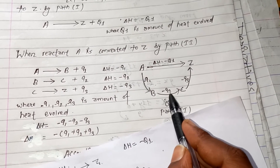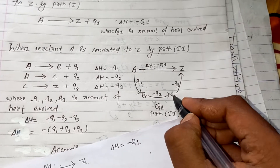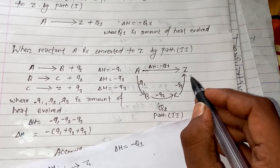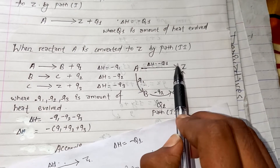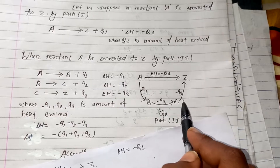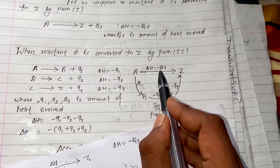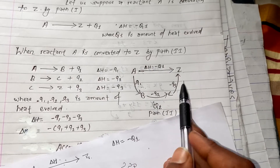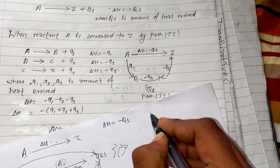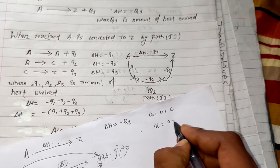In path 2: A to B evolves heat Q1; B to C evolves heat Q2; C to Z evolves heat Q3. The total heat for the endothermic or exothermic process is the sum of these individual steps.